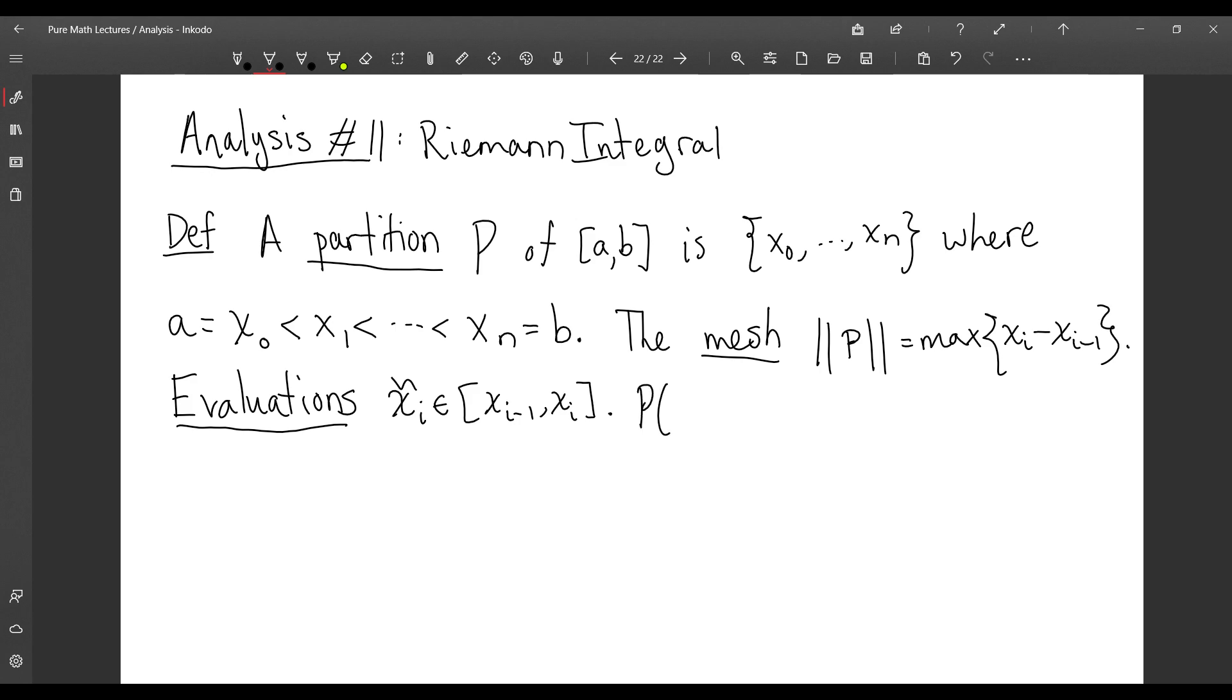we call P(f,{x̄ᵢ}), we are going to define this to be the sum as i goes from 1 to n of f evaluated at the evaluation points times Δxᵢ. This is called a Riemann sum.